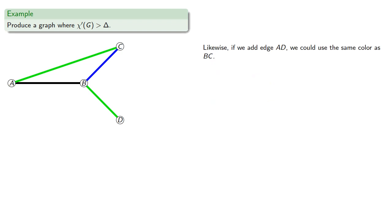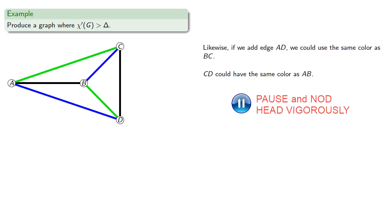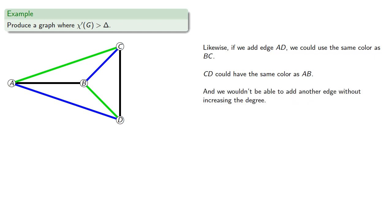Likewise, if we add edge AD, we could use the same color as BC, and CD could have the same color as AB, and we wouldn't be able to add another edge without increasing the degree. So instead of adding an edge, let's add another vertex.